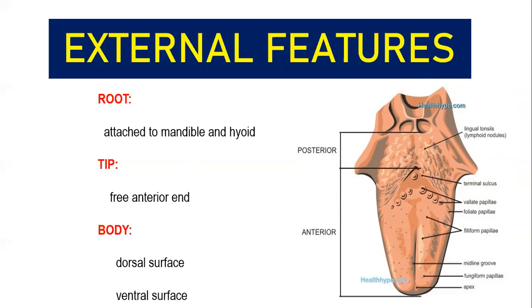Now moving on to your body. Body of the tongue is very important — you have lots of structures to be described. If you take the body of the tongue, you have two surfaces to study: the dorsal surface and then your ventral surface. If you go and stand in front of the mirror and protrude your tongue, the surface you see — the one you clean while brushing — is your dorsal surface. The other side is going to be ventral surface.